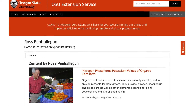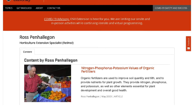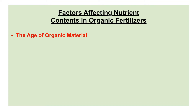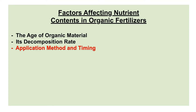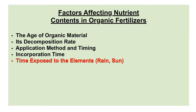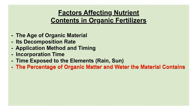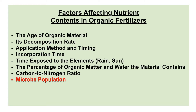The Penhillagon report provides a list of factors that affect the nutrient contents of organic fertilizers. These are: the age of organic material, its decomposition rate, application method and timing, incorporation time, time exposed to the elements such as rain and sun, the percentage of organic matter and water, carbon to nitrogen ratio, microbe population, and soil type. Just by looking at these factors, we can say outright that no two organic fertilizers are the same. Different samples of the same organic materials could have different nutrient values and yield different results.